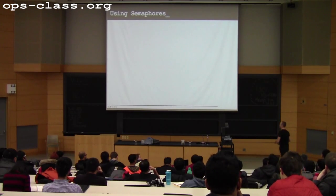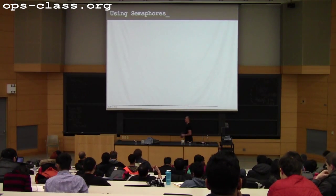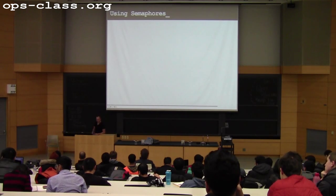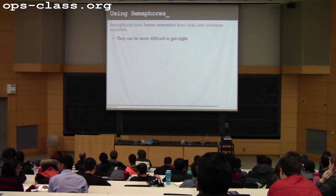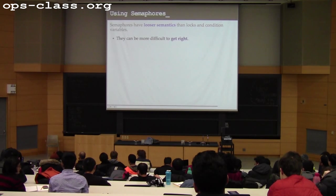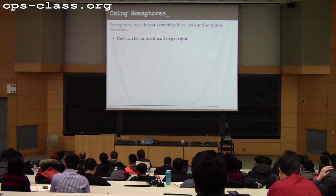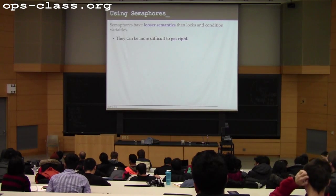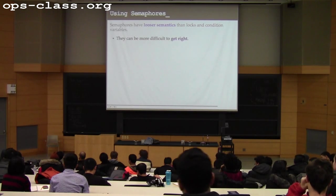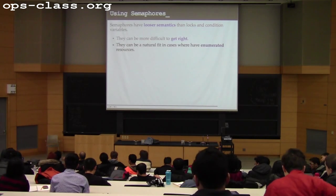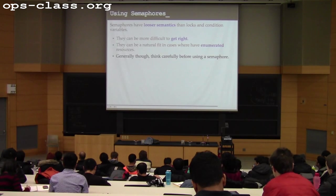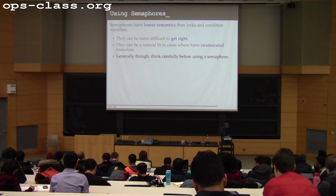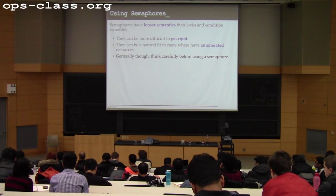My tip for semaphores: usually don't use them. Semaphores' looser semantics — no ownership — make them typically harder to get right than a lock. Definitely don't use a binary semaphore as a lock; you want ownership because it helps catch programming mistakes. Semaphores can be more natural with enumerated resources, but in general, if you're reaching for a semaphore in this class, think twice and ask someone.